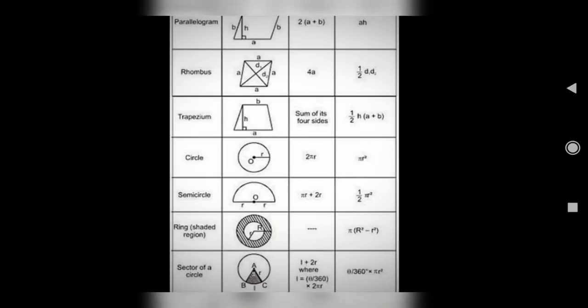And then parallelogram: perimeter is 2 into A plus B, area is A into H or base into height. Rhombus is 4A. All the sides are equal, so A plus A plus A equals 4A.